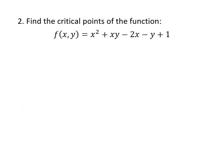Here we have another similar example. Again we're looking for critical points, so we're going to figure out the partial derivative f sub x, the partial derivative f sub y, and set them both equal to zero. In this case f sub x is 2x plus y minus 2, and my y partial derivative is going to be x minus 1.